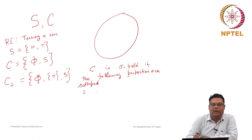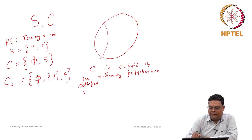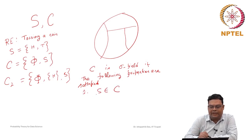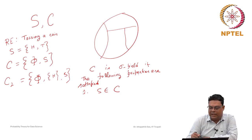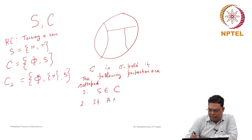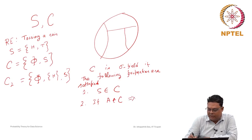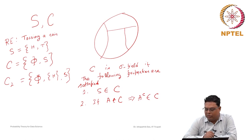The first property is that S must belong to C. Since S is also a subset of itself, if C is to be a sigma field then S must be in C. The second property is that if any set A belongs to C — meaning A is a subset of S — then the complement of A must also be inside C.